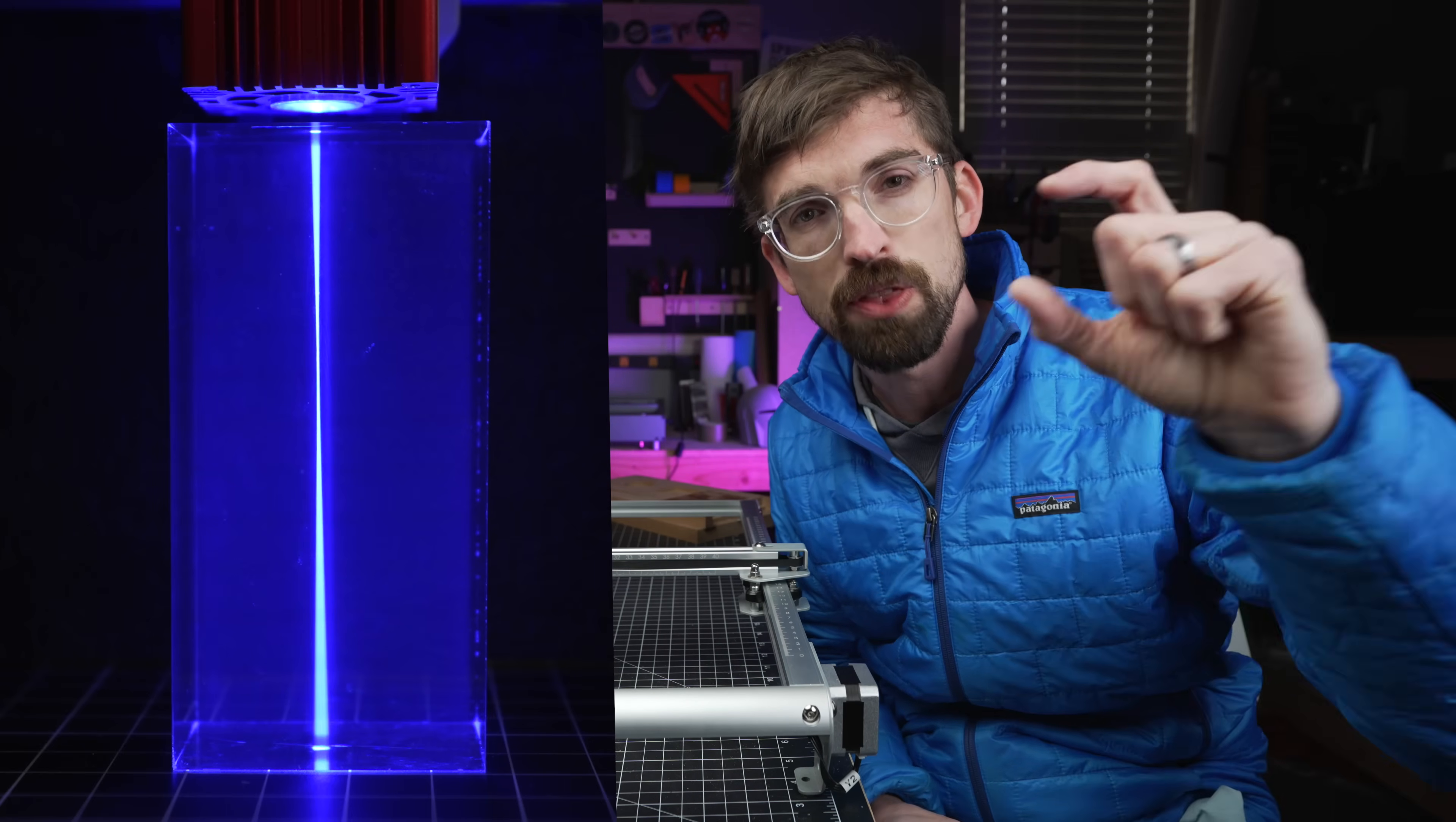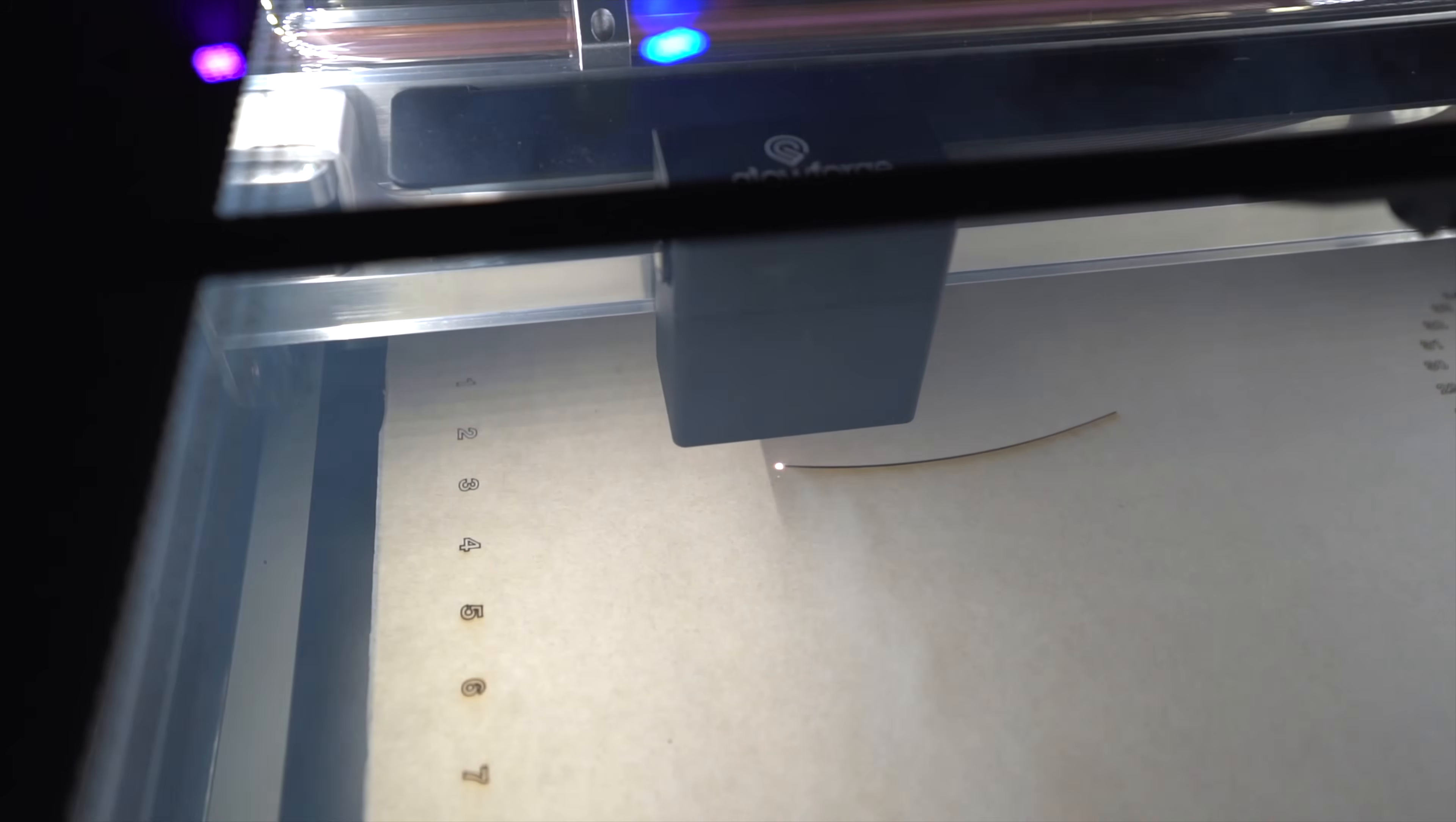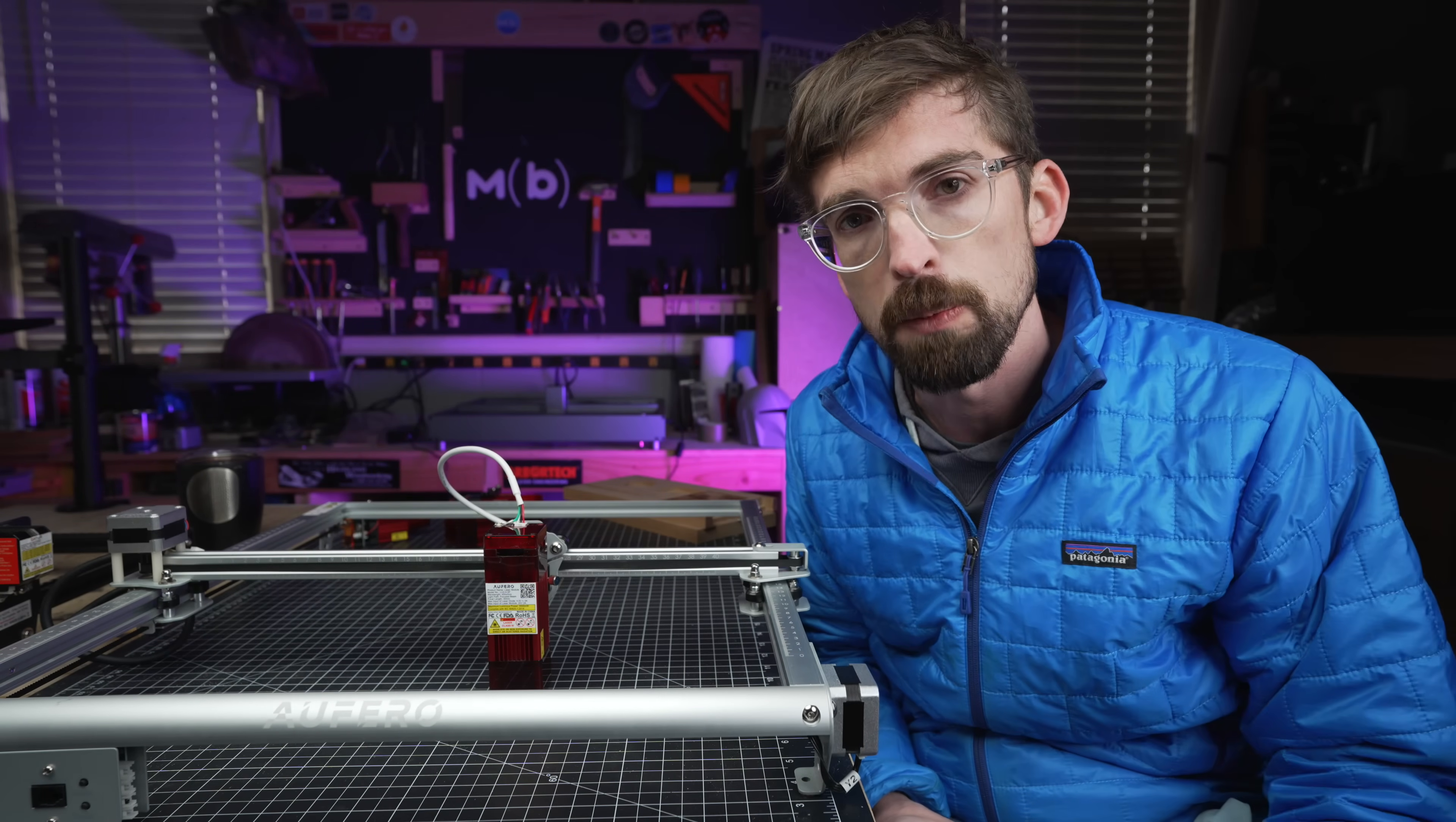What that means is as this is cutting through thicker material, the laser is going to be going further and further down. So the longer that it can stay in focus, the longer you're going to have your full power going all the way down. The higher end, especially CO2 machines, they'll actually lower the laser between each of those passes, whether they're using a depth sensor or they actually have a camera system like the Glowforge. These don't have that. So basically the only way around that is having a laser module that is long enough to get all the way through your material.